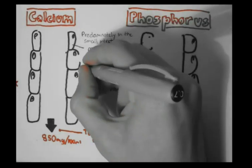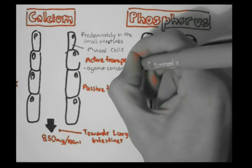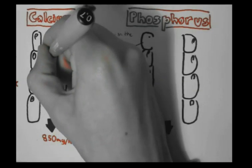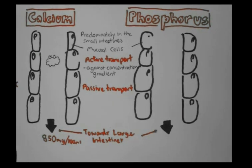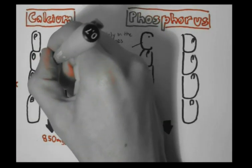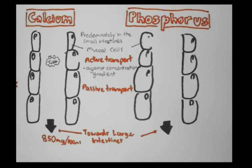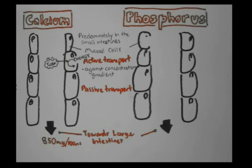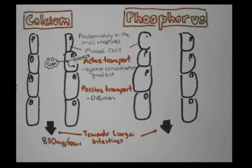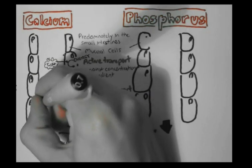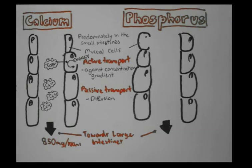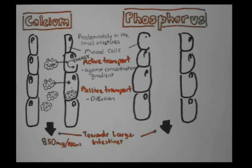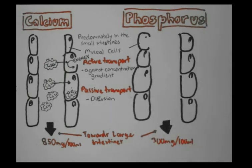Active transport is when calcium is absorbed against its concentration gradient, meaning it requires energy — ATP — to be absorbed. For example, a calcium molecule within the lumen, if it wants to move into the body, requires energy. Passive transport is basically a diffusion process: if there is more concentration of calcium within the lumen and only a little on the other side, calcium easily evens out.